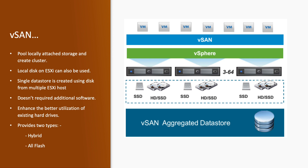vSAN has two types: one is hybrid and another is all-flash. In hybrid, we can have SSD drives as well as SATA drives. In all-flash, all drives are SSD disks.